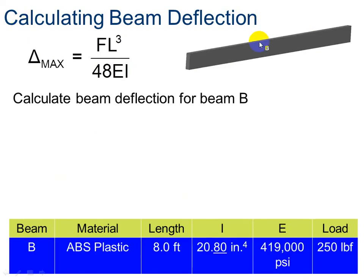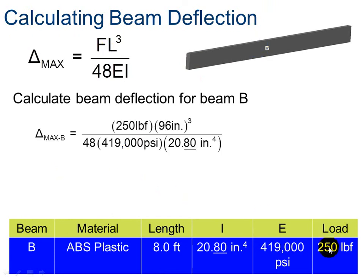Now let's calculate it for the ABS plastic. Same formula. I am applying the same load, 250 pounds. It is an 8-foot beam, so I still have 96 inches. My modulus of elasticity is different now. It is 419,000 psi, pounds per square inch. And then I am going to put in my moment of inertia. And now this beam, when I stand on it, it deflects almost half an inch.